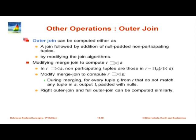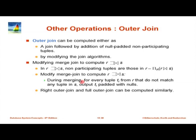For a left outer join, if a tuple tr from R does not match any tuple from S, we output it padded with null and move on to the next tuple. That is the only change to the merge join algorithm — a very trivial change. Earlier we said if there is no match, go to the next tuple; now we output it padded with null. Right outer join is completely symmetric, and full outer join is also straightforward — for either relation, if there is no match, output it padded with null.